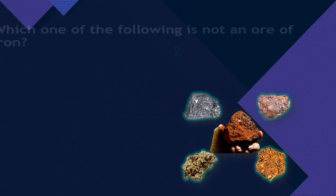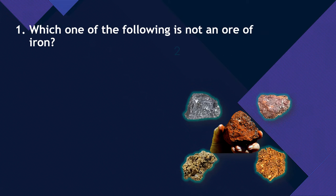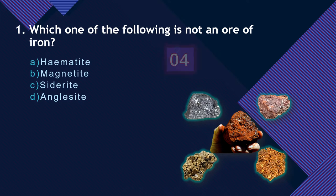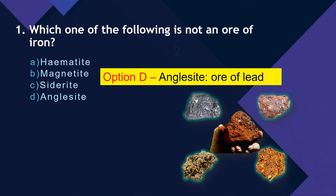Question 1: Which one of the following is not an ore of iron? Iron is chemically denoted by Fe. Option A: Haematite. Option B: Magnetite. Option C: Siderite. Option D: Anglesite. The correct option is Option D, Anglesite.